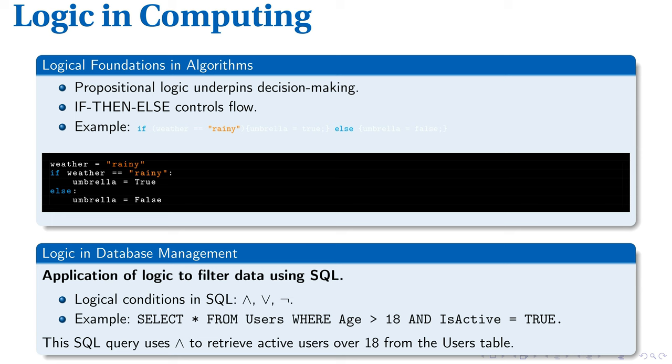The concept of logic often governs algorithmic flow. Propositional logic specifically plays a critical role in decision-making processes within algorithms. This is particularly reflected in the if-then-else construct common in programming languages. Consider a simple scenario, deciding whether to set the umbrella variable to true or false based on the weather condition. This usage has been demonstrated in the Python code here clearly.